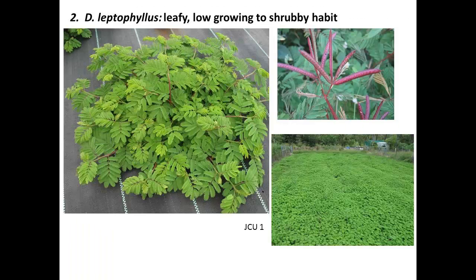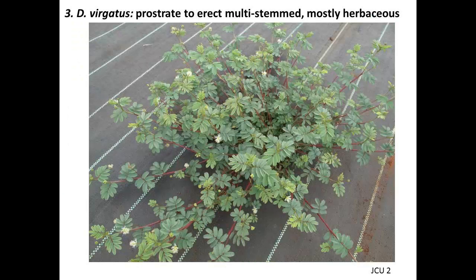The second species is Desmanthus leptophyllis, which is a leafy — sometimes very leafy — plant that can be low-growing, with some having a shrubby habit. The third is Desmanthus virgatus, which is a prostrate to erect, multi-stemmed, and fairly herbaceous type of plant.